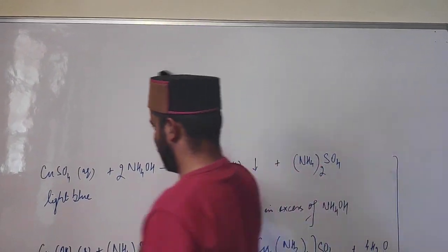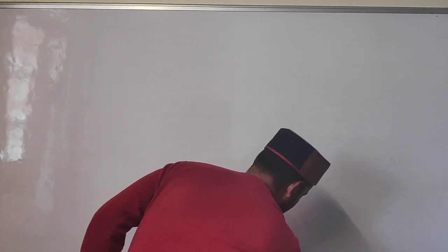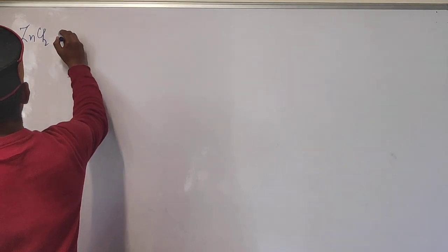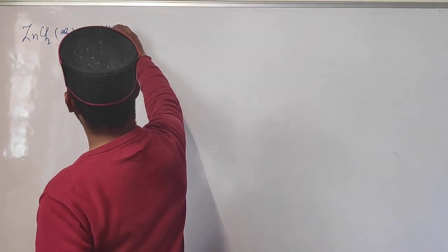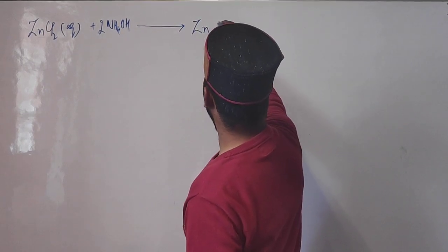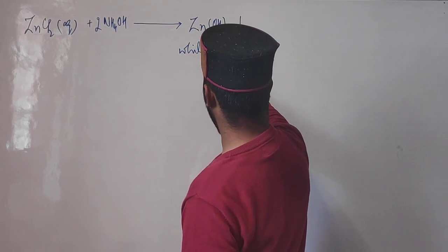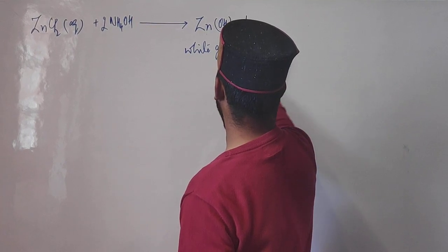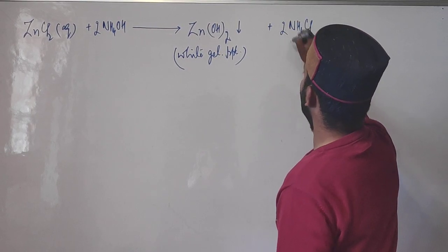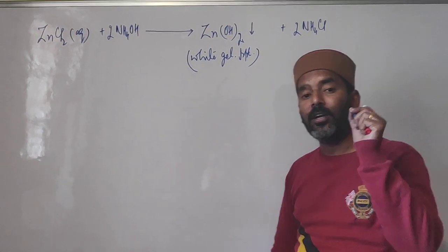Now we discuss the action of ammonium hydroxide on zinc salts. Zinc salts also give a precipitate with ammonium hydroxide. Take zinc chloride — this is a colorless solution. When we add ammonium hydroxide in small quantity, the zinc ions get precipitated as zinc hydroxide Zn(OH)2, which is insoluble, giving a white gelatinous precipitate. Ammonium chloride remains in solution.